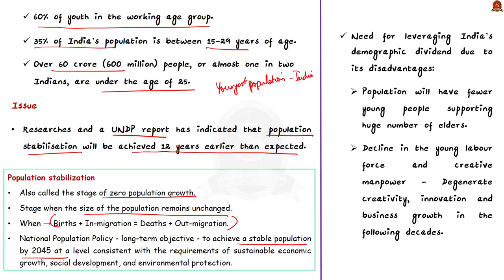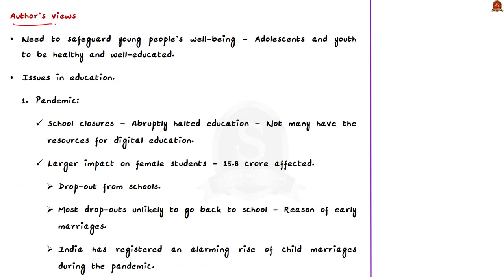Even though population stabilization has many benefits, it will come with certain disadvantages. The population will have fewer young people supporting a huge number of elders, implying a need for fewer schools but greater demand for assisted living support. Young people would get more employment opportunities, higher wages, and cheaper houses, but would also bear the cost of geriatric care. Additionally, this would mean decline in the young labor force and creative manpower, ultimately degenerating creativity, innovation, and business growth. That is why the author stresses the need to safeguard young people's well-being so the existing positive demographic dividend can sway development to our advantage.